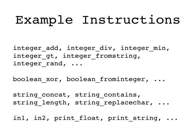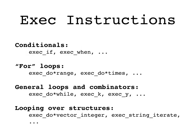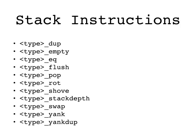Input instructions allow a program to push copies of program inputs on demand, and print instructions send output to write-only stacks that function like consoles or files. Exec instructions implement control structures such as conditionals and loops by manipulating items on the exec stack, which will be executed later. Finally, stack manipulation instructions are also available for every type — for example, to duplicate the top item on the stack, to test if a stack is empty, to test the top two items for equality, and so on.